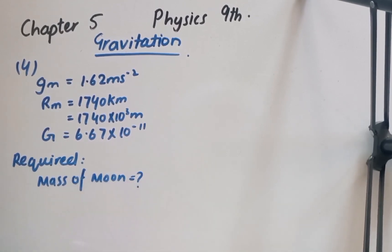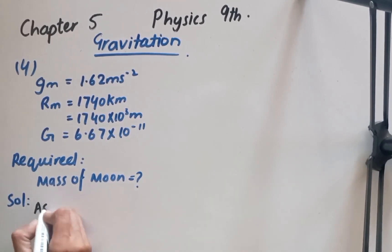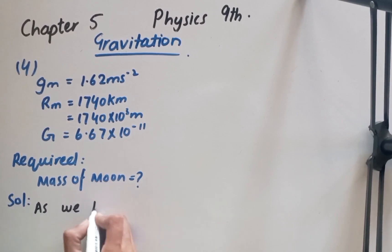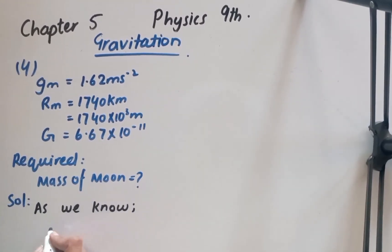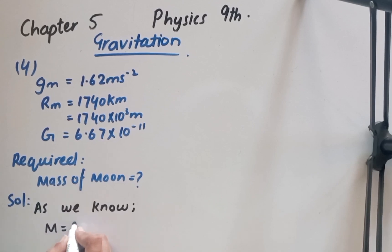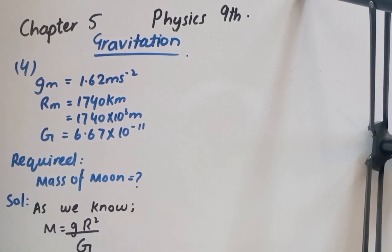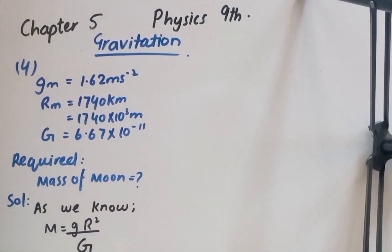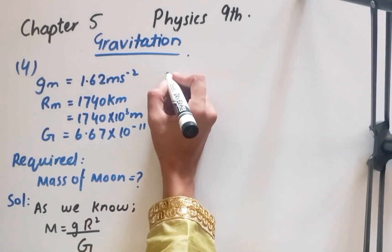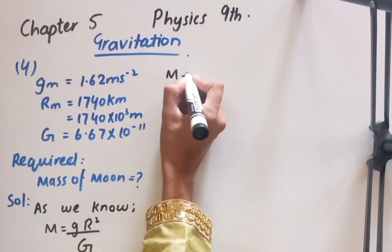Now I am starting the solution. As we know, mass is equal to gravitational acceleration multiplied by r² over gravitational constant. We will put the given values into this formula.